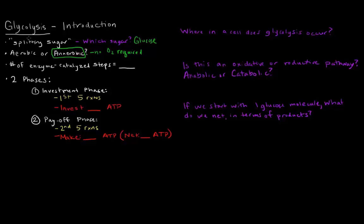How many steps is glycolysis? There are actually ten enzyme-catalyzed steps to glycolysis. And the way I kind of think about it is there are two phases, one being the investment phase, the second being the payoff phase. So glycolysis' first five reactions would be considered the investment phase in which we invest two ATP.